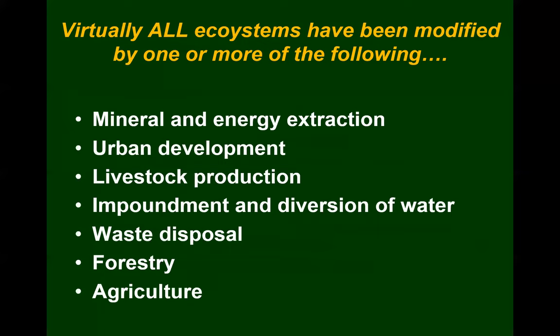Virtually all ecosystems have been modified somehow by humans — there's no ecosystem on the planet that humans haven't touched. That's why 'just let nature handle it' doesn't work — it's too late. We've already modified everything. Activities include mineral and energy extraction, urban development, livestock production, impoundment and diversion of water, waste disposal, forestry, agriculture — and we could add climate change and pollution to this list. Everywhere on the planet has been modified in one way or another.